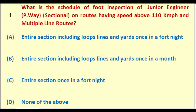What is the schedule of foot inspection of Junior Engineer Permanent Way Sectional on routes having speed above 110 kmph and multiple line routes? Options: entire section including loops, lines and yards once in a fortnight; entire section including loops, lines and yards once in a month; entire section once in a fortnight; none of the above. The right answer is: entire section including loops, lines and yards once in a fortnight.